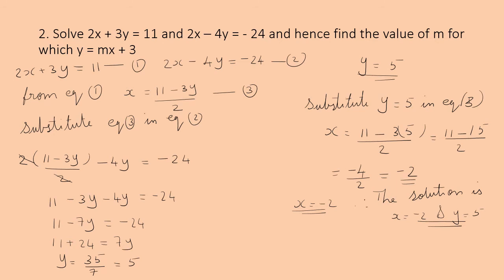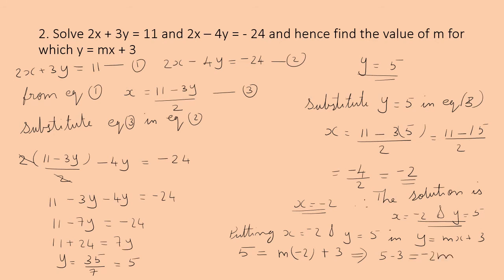Now find the value of m. Put x = −2 and y = 5 in y = mx + 3: 5 = m(−2) + 3, so 5 − 3 = −2m, giving m = 2/(−2) = −1. Therefore m = −1.